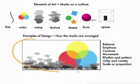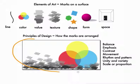The sum total of these marks on a surface might be described as a composition, and we would describe this composition using a set of terms called the Principles of Design: Balance, Emphasis, Contrast, Movement, Rhythm and Pattern, Unity, and Variety.